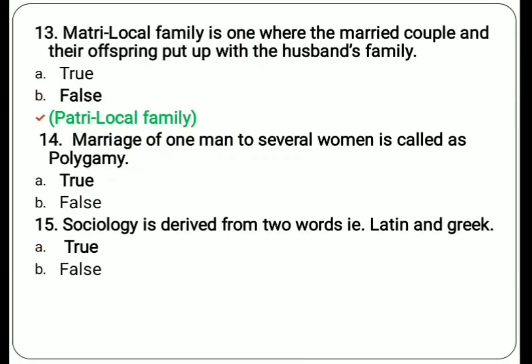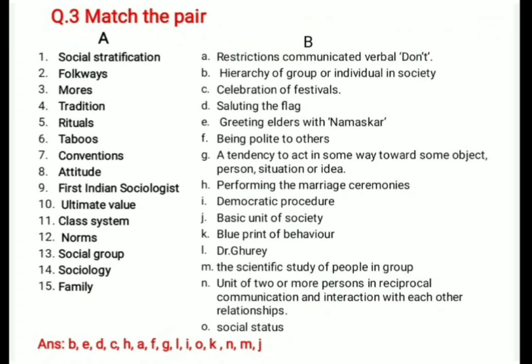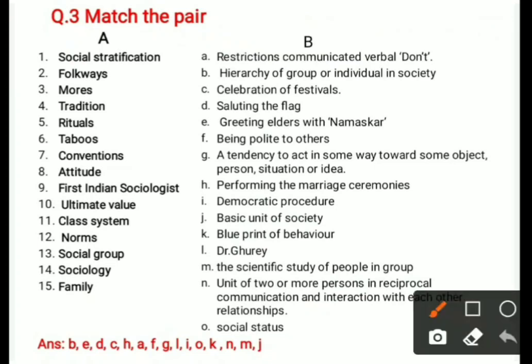Now we move to match the pairs. There are 15 items in column A to match with column B. First: social stratification — answer is hierarchy (b), meaning the hierarchy of groups or individuals in society.